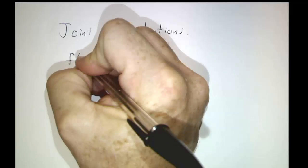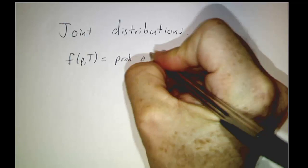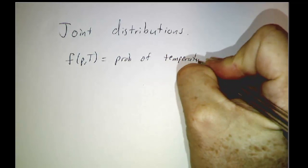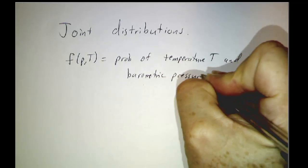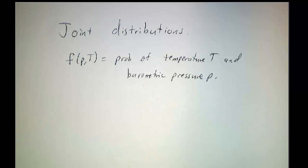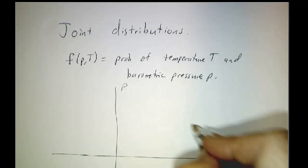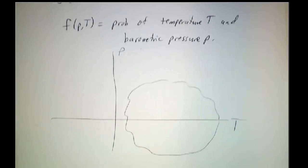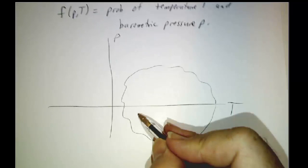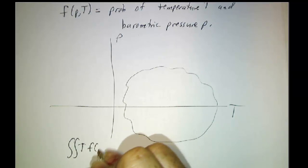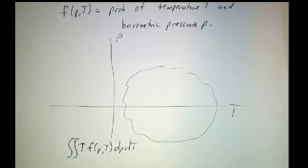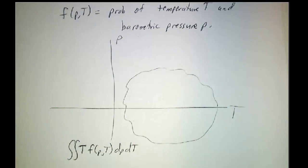Finally, you sometimes have functions of two variables. Suppose that f(t, p) is the probability of having temperature t and barometric pressure p. Instead of a function of one variable, since we're keeping track of both temperature and pressure, we've got a function of two variables — t and p. There's a certain range of possible temperatures and a certain range of possible pressures, and the function takes values in this region. If you want to find the average temperature, you have to do a double integral over that region of the temperature times f dp dt. Whenever you're dealing with multiple variables, you're going to deal with multiple integrals.